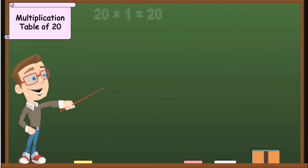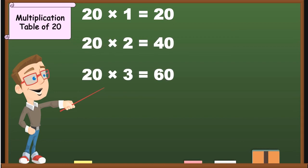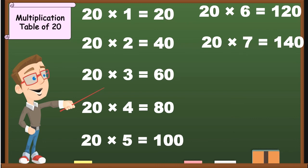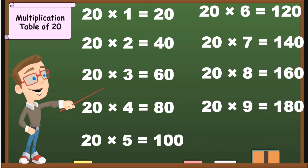20 1's are 20, 20 2's are 40, 20 3's are 60, 20 4's are 80, 20 5's are 100, 20 6's are 120, 20 7's are 140, 20 8's are 160, 20 9's are 180, 20 10's are 200.